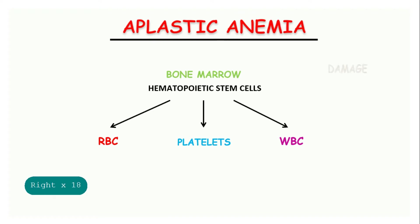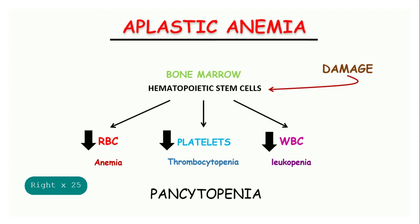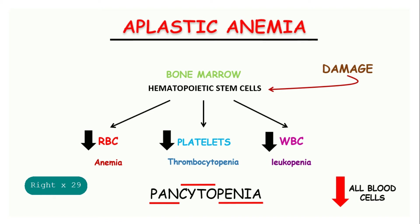What happens in aplastic anemia is when there is damage to hematopoietic stem cells. This may result in decreased production of RBC, decreased production of platelets, and decreased production of WBC. Decreased RBC, also termed as anemia; decreased platelet as thrombocytopenia; and decreased WBC as leukopenia. These three conditions may be called pancytopenia. From the word itself, pan means all, cyto means blood cells, and penia means decrease in number. So pancytopenia is the decrease of all types of blood cells.